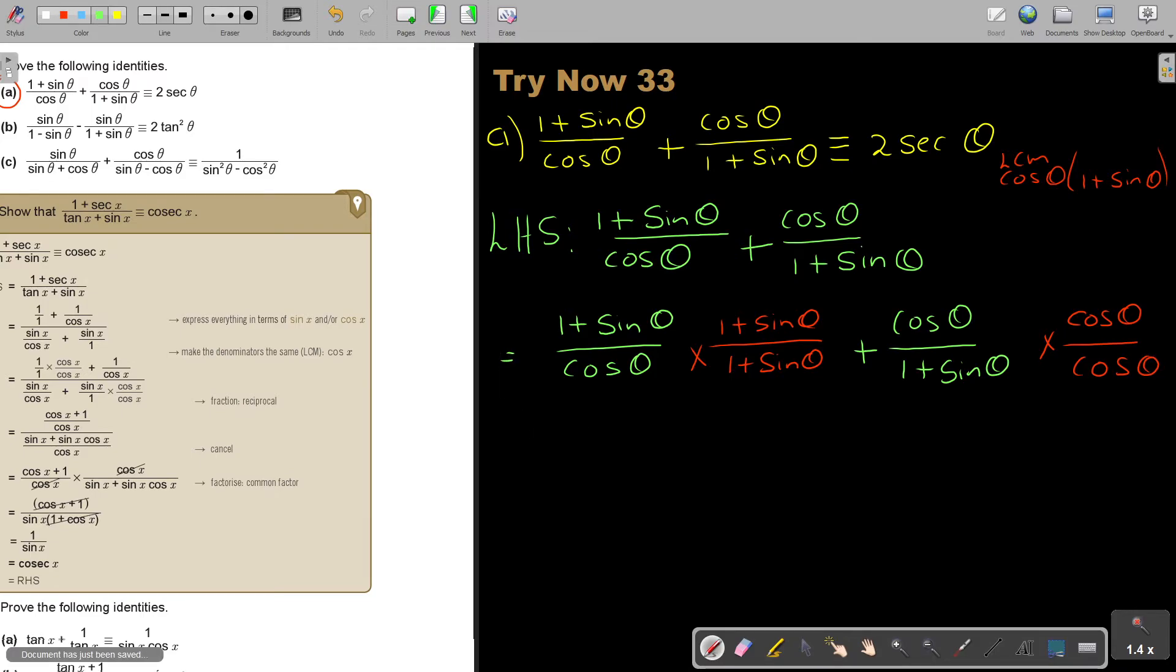Then what do I get? I get 1 plus sin theta, and I get squared, because the signs are the same. Remember, my LCM is now cos theta times 1 plus sin theta. Plus, if I multiply this, cos squared theta.